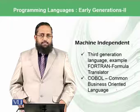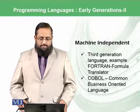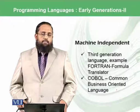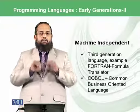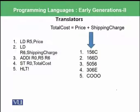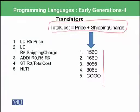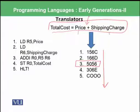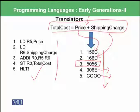Third generation languages like Fortran — formula translator — and COBOL — common business oriented language — were built which were able to translate a single instruction like 'total cost is equal to price plus shipping charge' into those five steps. Such translators were built that could convert that line into five instructions: load price, load shipping charge, add, store back into RAM, and then halt.